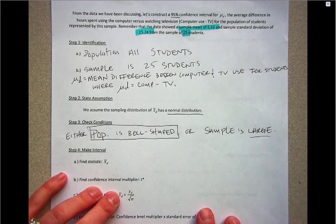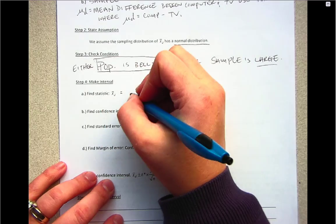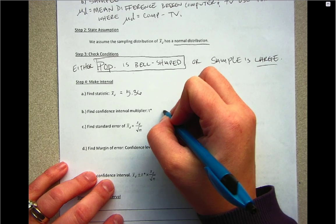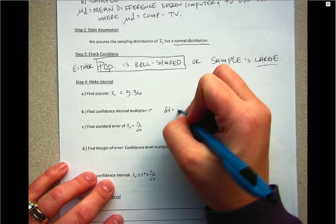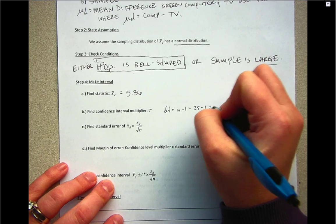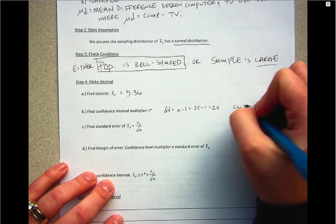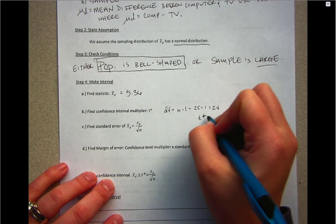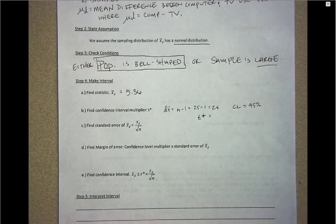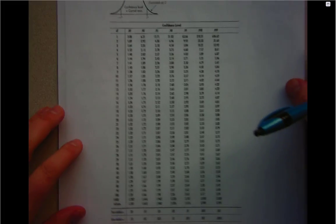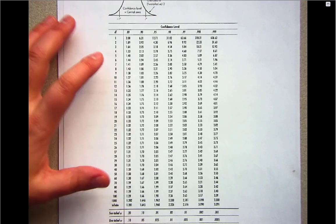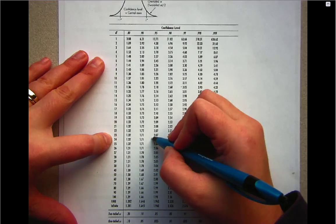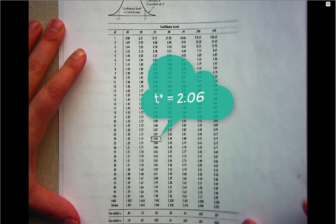Next, moving into our interval, we've already found that x̄_d is 5.36. Our t* requires degrees of freedom, which is n - 1, so we have 24 degrees of freedom. We need the confidence level of 95%. This gives us t* at 95% and 24 degrees of freedom, so t* = 2.06.